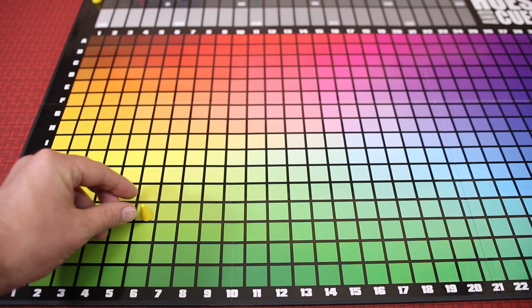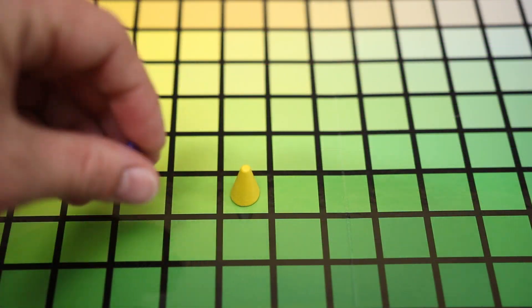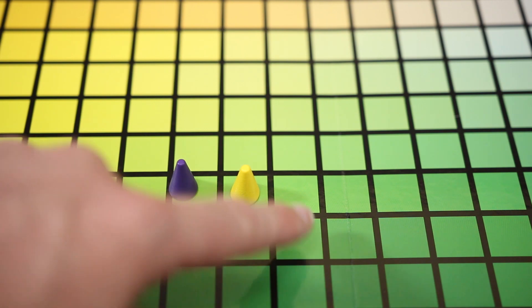The other players will then place one of their pieces on a space they believe the cue giver has chosen. Only one piece can be on a space, so players may be forced to choose an additional space in the area.